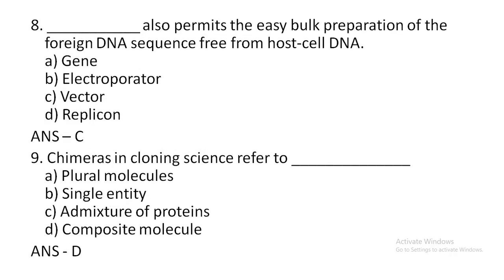Dash also permits the easy bulk preparation of the foreign DNA sequence free from host cell DNA. Option A: gene. Option B: left operator. Option C: vector. Option D: replicants. The correct answer is option C — vector. Chimera in cloning science refers to dash. Options: plural molecules, single entity, mixture of proteins, option D: composite molecule.